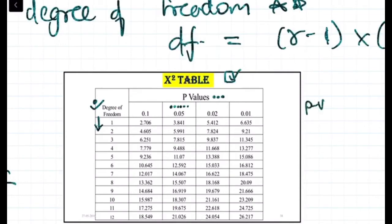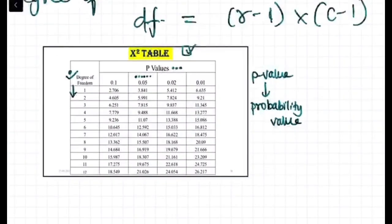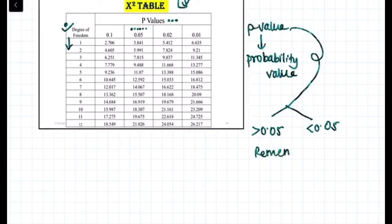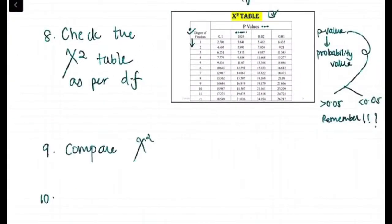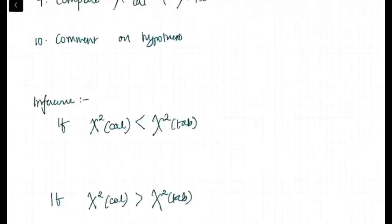According to the degrees of freedom we gonna check out the p-value. P-value is probability value. We check the probability value at 0.05 table mostly. If it is greater than 0.05 then what is the result, and less than 0.05 we will be seeing it in this video itself. Ninth step is comparing the chi-square calculator and chi-square table, and tenth is the comment on hypothesis.